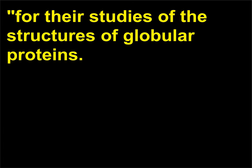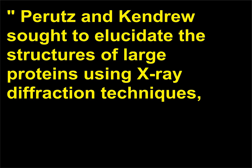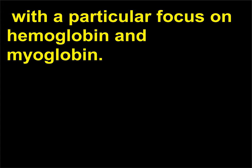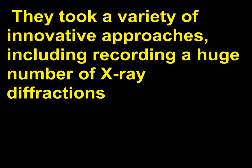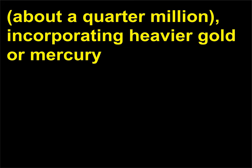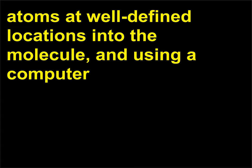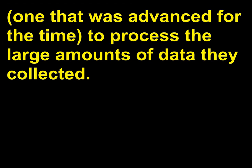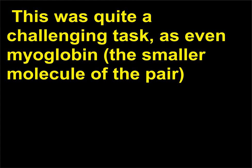Perutz and Kendrew sought to elucidate the structures of large proteins using X-ray diffraction techniques, with a particular focus on hemoglobin and myoglobin. They took a variety of innovative approaches, including recording a huge number of X-ray diffractions — about a quarter million — incorporating heavier gold or mercury atoms at well-defined locations into the molecule, and using a computer, one that was advanced for the time, to process the large amounts of data they collected. This was quite a challenging task, as even myoglobin, the smaller molecule of the pair, contains roughly 2,600 atoms.